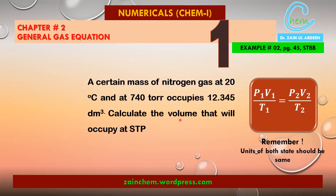This is clearly a general gas equation problem because it involves pressure, volume, and temperature across two states. One volume is given and we need to find the second volume. We have V1, and we need to find V2, with T1, T2, P1, and P2 all involved.